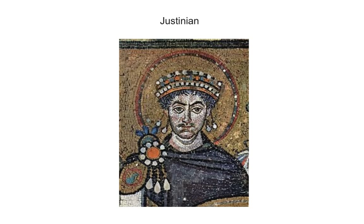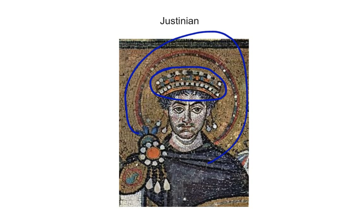Justinian is an absolute ruler, and he is not only the ruler of the Byzantine Empire but also the ruler of the church. You can see in this depiction he has a crown on his head indicating he is the emperor, and a halo around his head indicating religious significance as well. This is going to be one of the first real separations in the church — tomorrow we'll talk more about the actual split between Roman Catholicism and Eastern Orthodox.